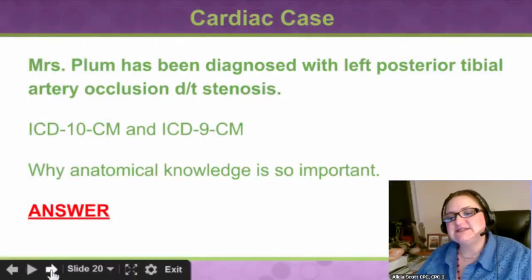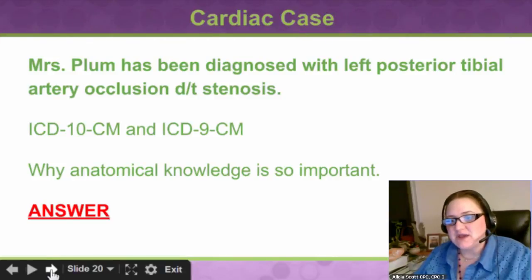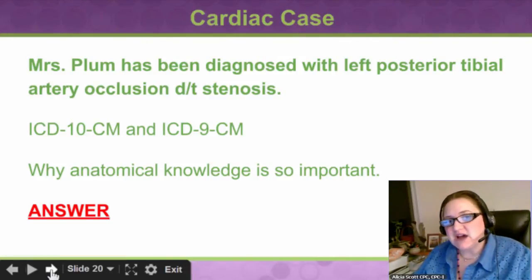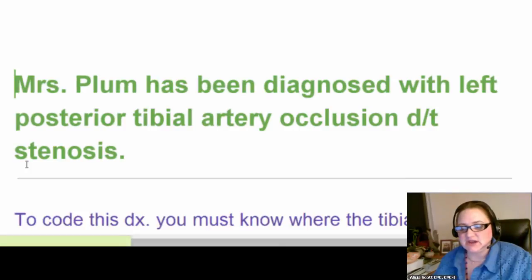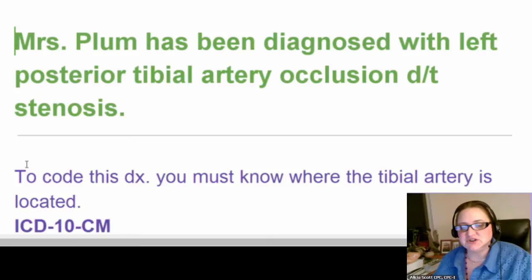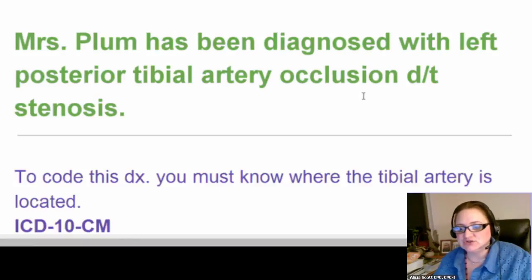Let's look at a cardiac case and see how this knowledge plays out. Mrs. Plum has been diagnosed with left posterior tibial artery occlusion due to stenosis. We're going to code this in ICD-10 and ICD-9. This is why anatomical knowledge is so important when dealing with cardiac coding. Mrs. Plum has a left posterior tibial artery occlusion due to stenosis — so what are we going to look up first? We're going to look up occlusion, because that's what she's being seen for: an occlusion of her artery.